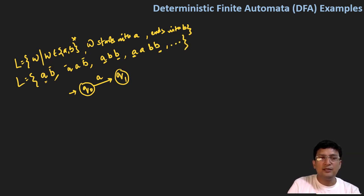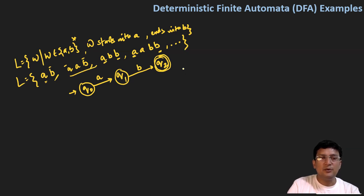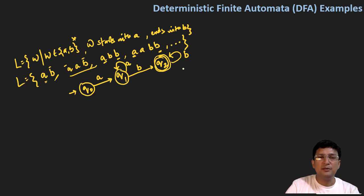With A, I move to the q1 state. With B, I should move to q2 state, which is the final state. But if I have a string 'AAB' — I already got A, if I get another A I should stay in q1, and if I get a B after this I should move to q2. Now if I get a B in the final state, I should remain in the final state.